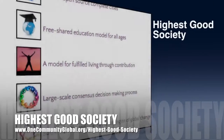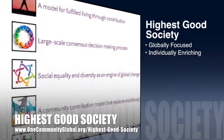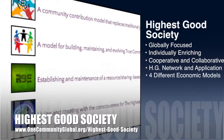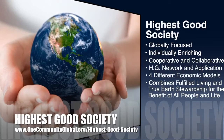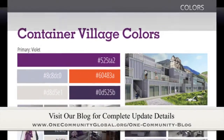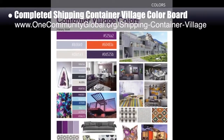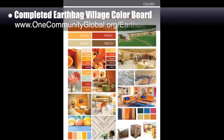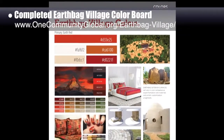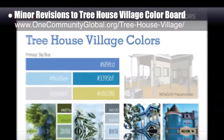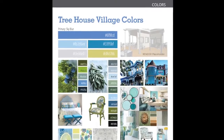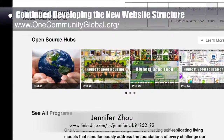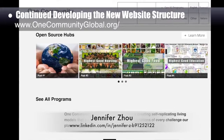The One Community approach to Highest Good Society is globally focused, individually enriching, cooperative and collaborative, includes a Highest Good Network and Application, four different economic models, and combines fulfilled living and true earth stewardship for the benefit of all people and all life on this planet. This last week, the core team revised and completed color boards with final color callouts for the shipping container village pod 5, recycled materials village pod 6, and earthbag village pod 1, and made minor revisions to the treehouse village pod 7 color board, which is now 99% complete. Jennifer Zhao, web designer, completed her fifth week developing the new website structure, focusing on the header, formatting, and filter functionality.